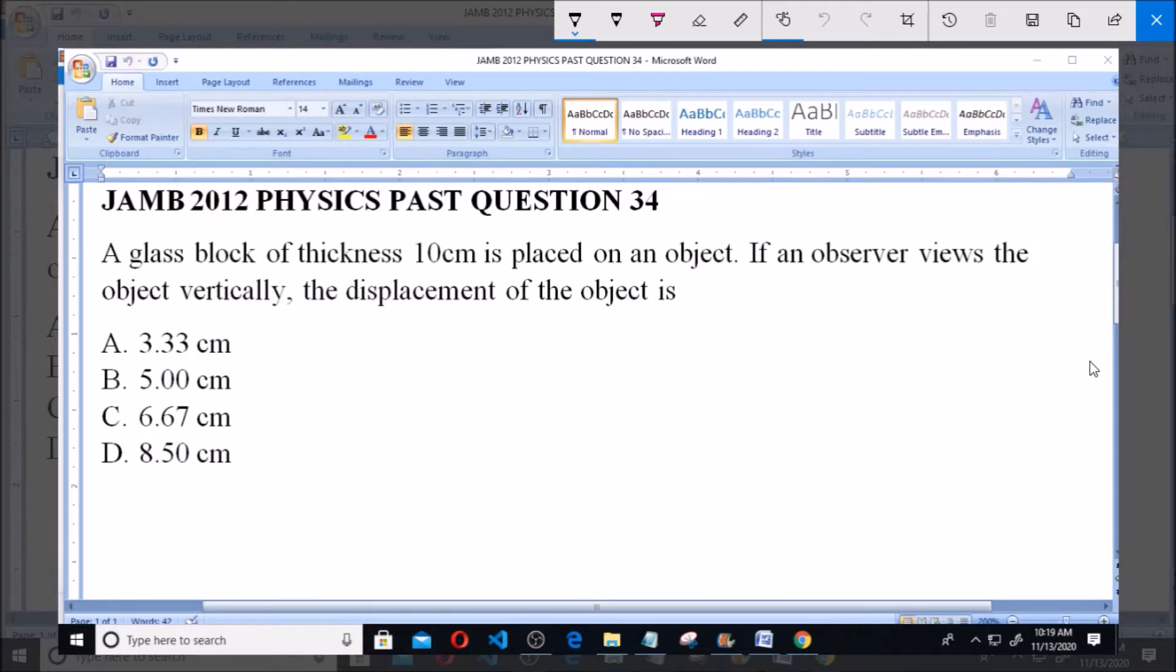A glass block of thickness 10 cm is placed on an object. If an observer views the object vertically, the displacement of the object is 3.33 cm, 5 cm, 6.67 cm, or 8.50 cm.